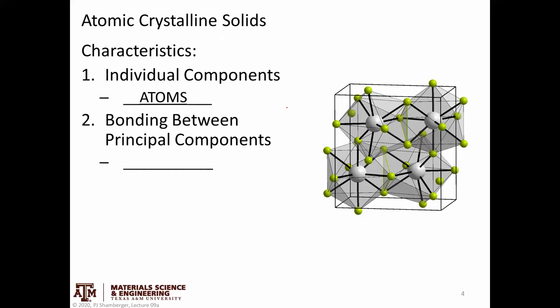So in order to get started, let's think about how we described these different systems before. In atomic crystalline solids — things like metals or ionic solids — the individual components of that crystal structure are atoms. The bonding between the principal components is strong primary bonding — ionic bonding, covalent bonding, or metallic bonding. Bond enthalpies can be quite strong between individual atoms.